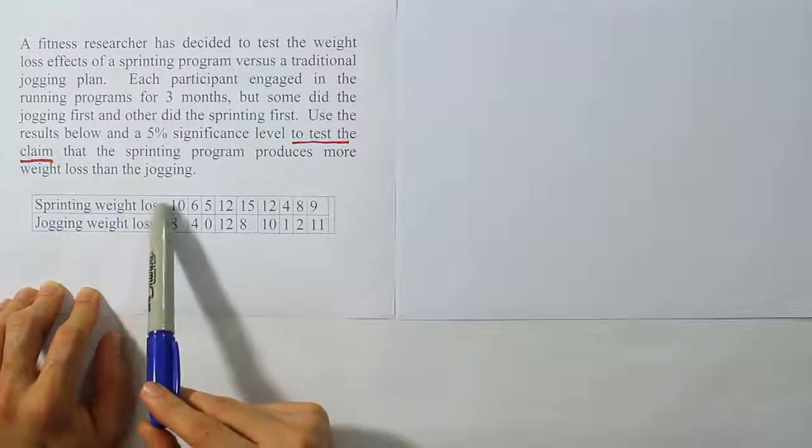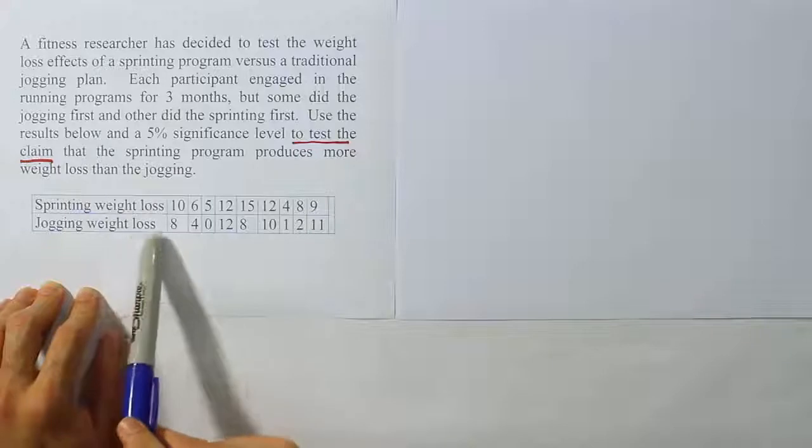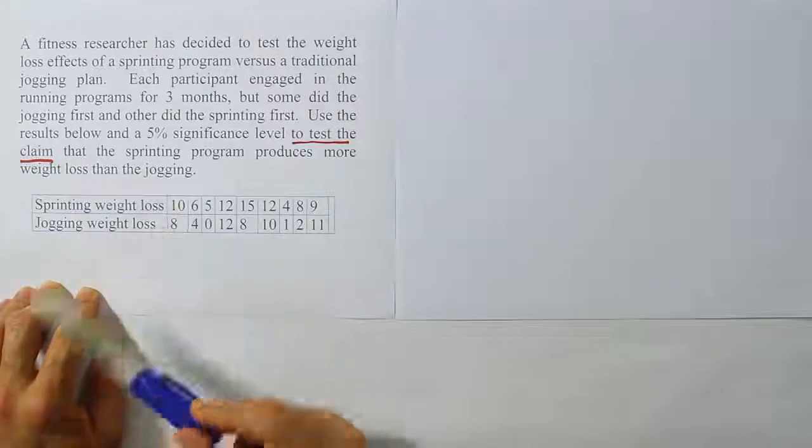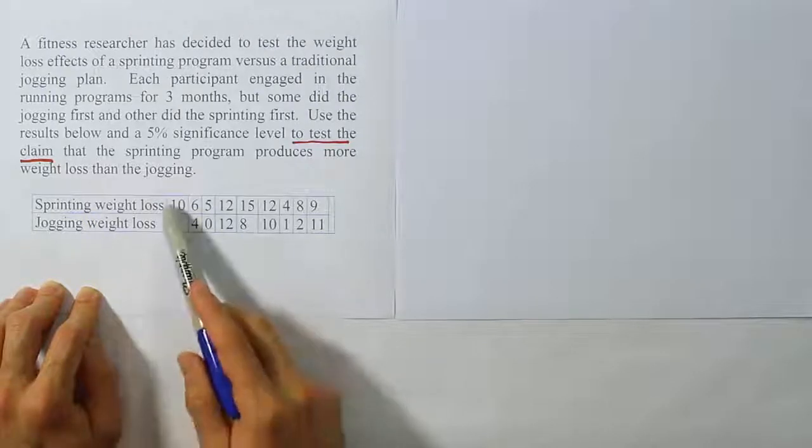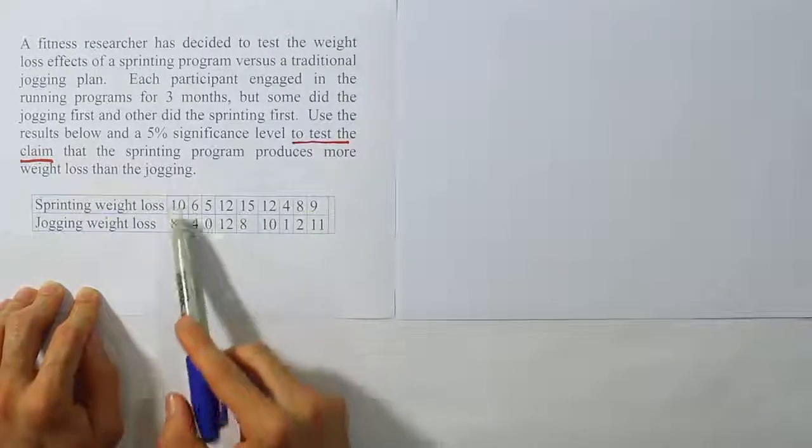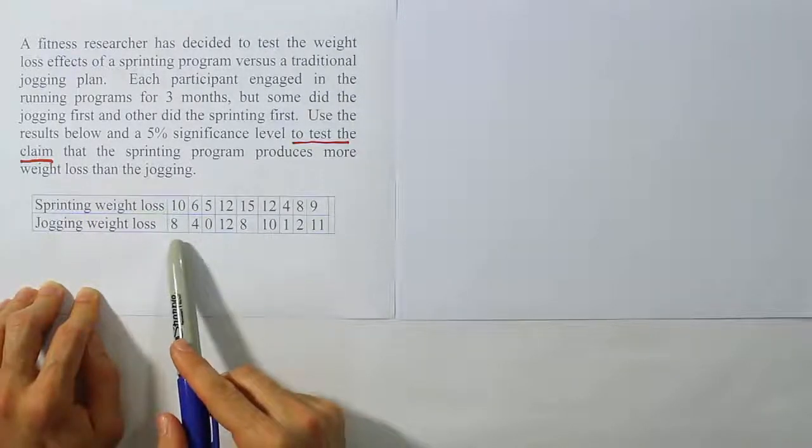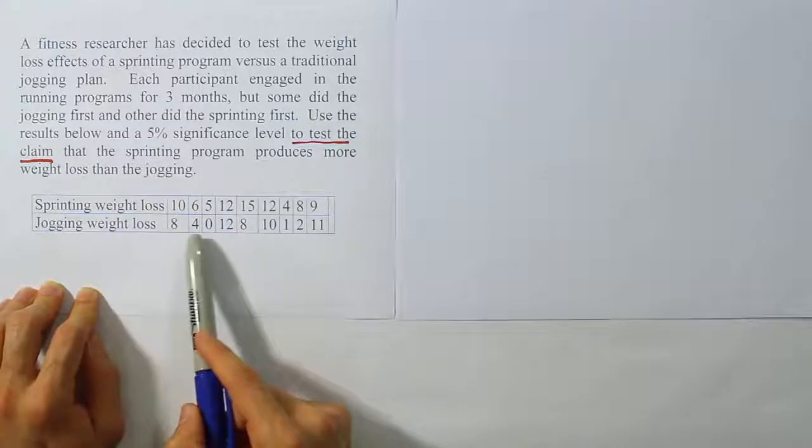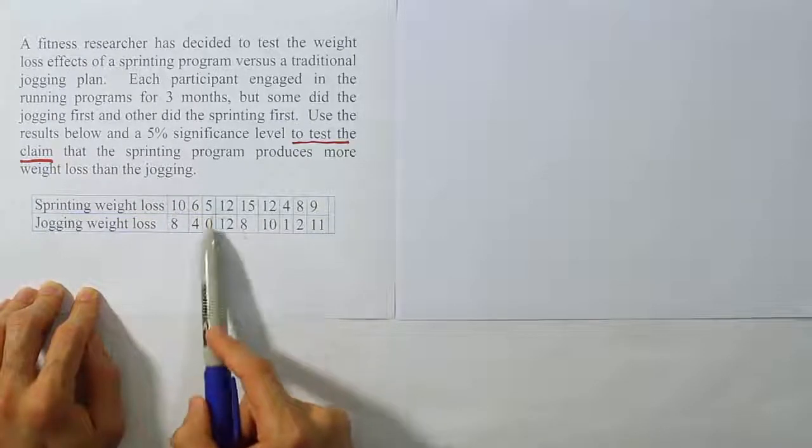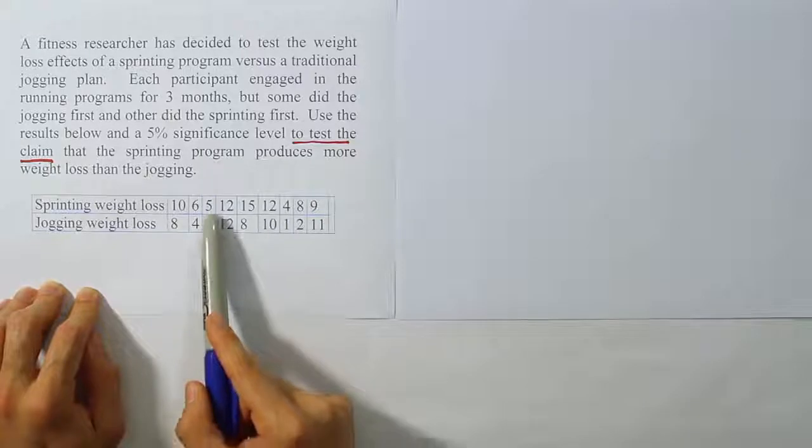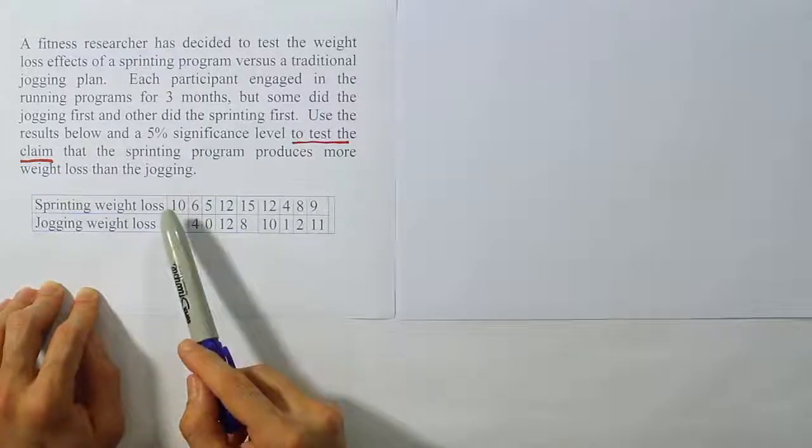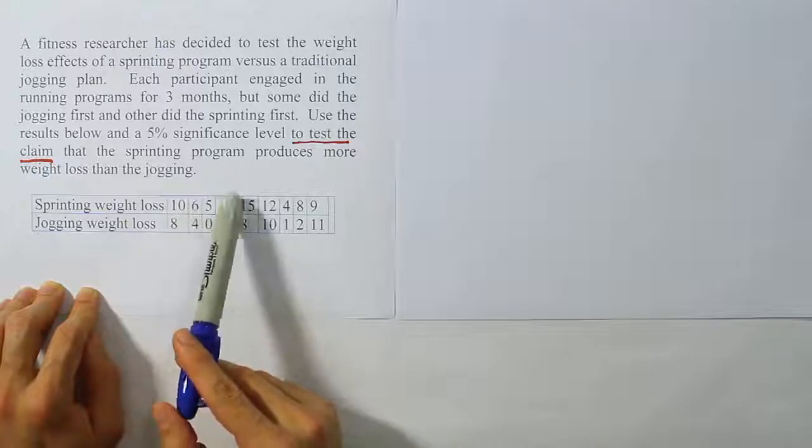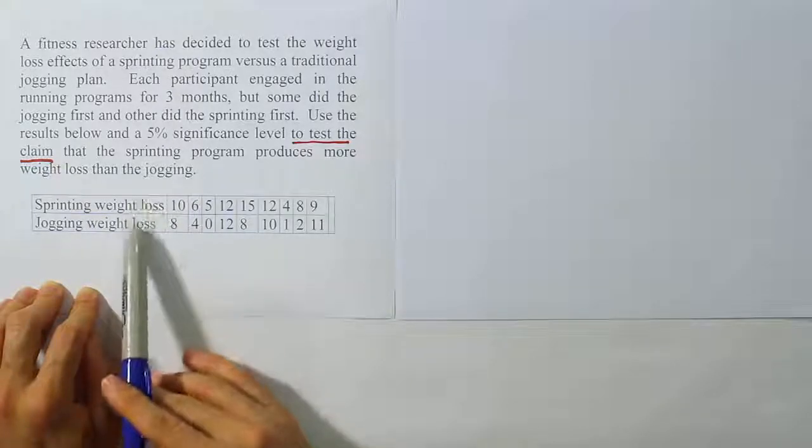This is the first guy's sprinting weight loss and this is the first guy's jogging weight loss. So they're connected to the person. Some people might have a tendency to lose more weight and so of course these numbers would generally be higher for a guy who has a tendency to lose a larger amount of weight. Where this person might have a tendency to keep weight on and so their numbers would be relatively lower. However, we're not going to be comparing person to person. We're going to be comparing sprinting and jogging.